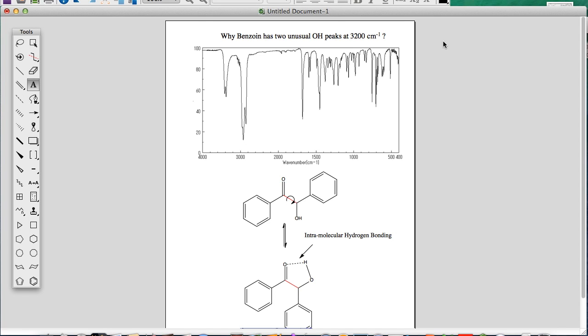Today we're going to learn why benzoin has two unusual OH peaks at 3200. In our separation of aspirin lab, we have one of the contaminants benzoin.